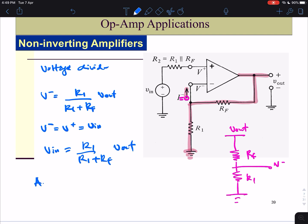The voltage gain equals to V out over Vin equals to R1 plus RF over R1. This is the gain of our non-inverting amplifier.